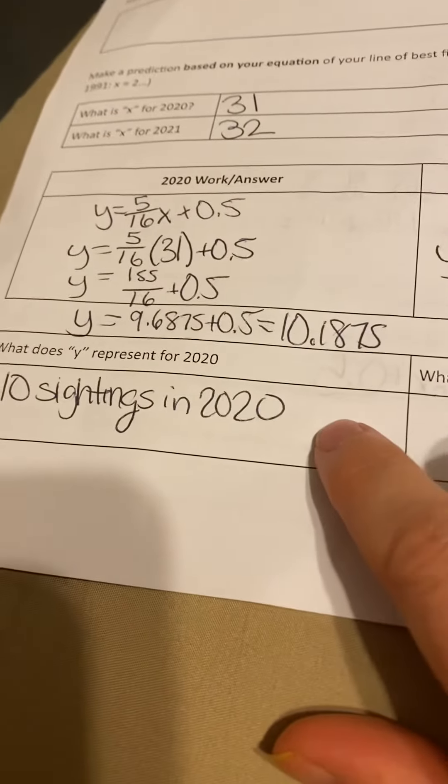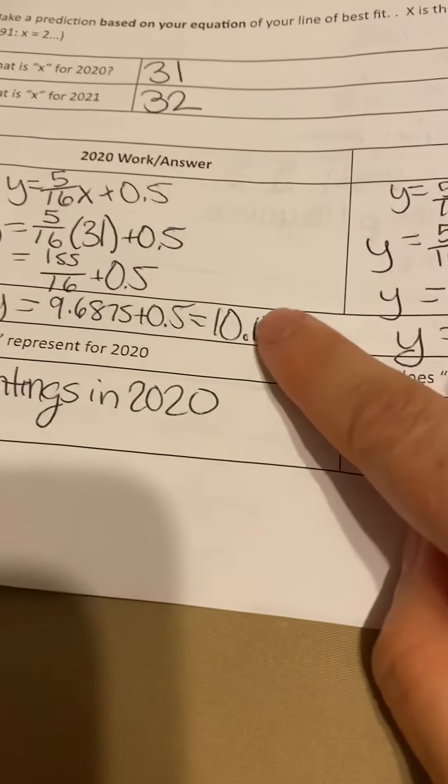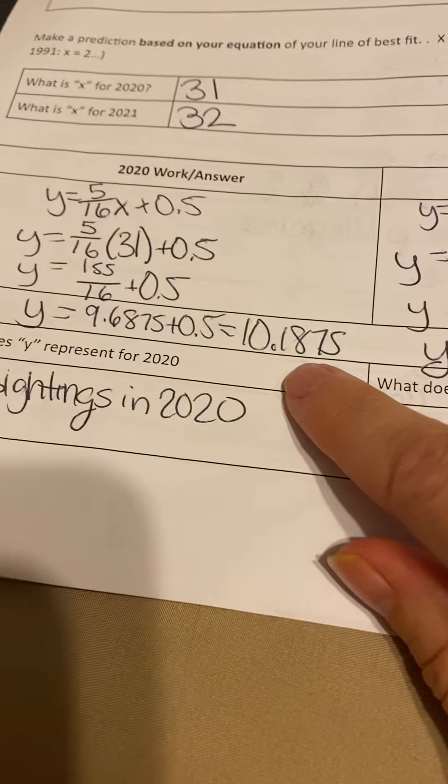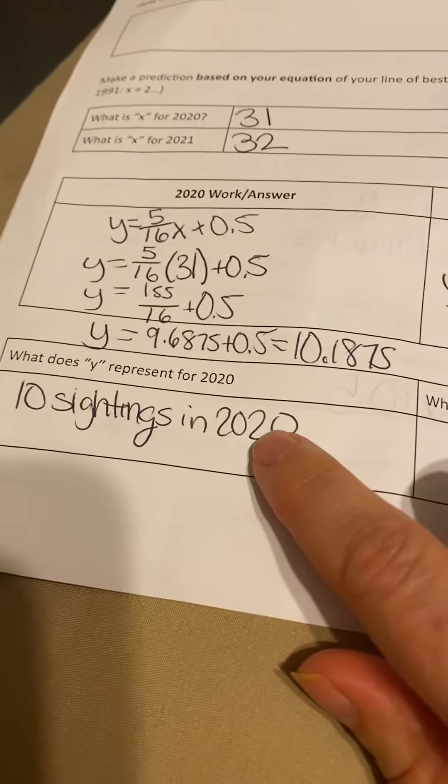So what does the Y represent in 2020? Well, that's going to be how many sightings of Bigfoot this made up state could expect to have. And so you could say 10 sightings in 2020.